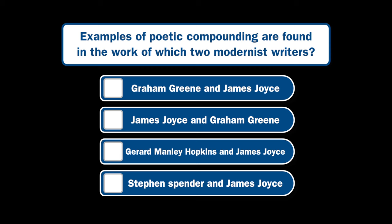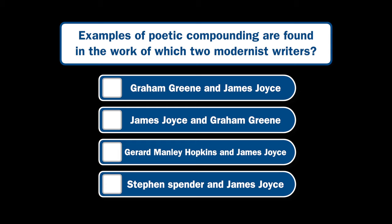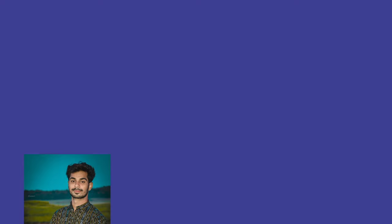The question from previous year UGC NET was: examples of poetic compounding are found in the work of which two modernist writers? The right answer to this question is C — Hopkins and James Joyce. We will discuss this concept as well as how Hopkins and James Joyce use these techniques in their own works.